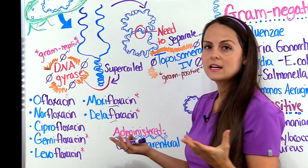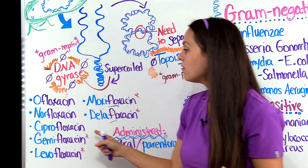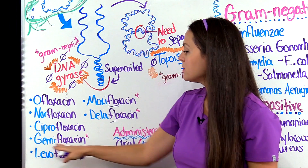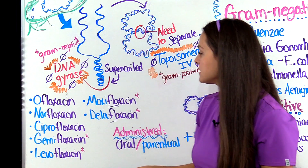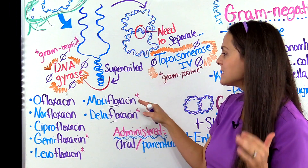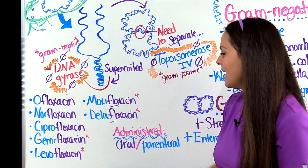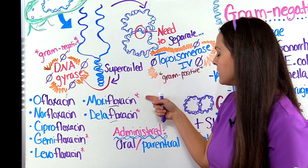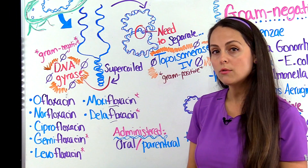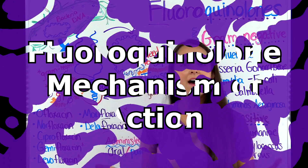Some of these medications include ofloxacin, norfloxacin, ciprofloxacin, gemifloxacin, levofloxacin, moxifloxacin, and delafloxacin. The ones with the little pink stars are the newer ones in this group.